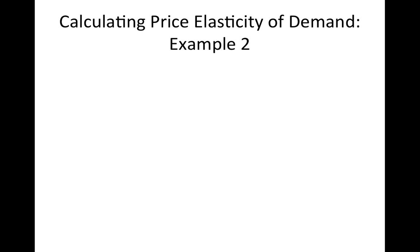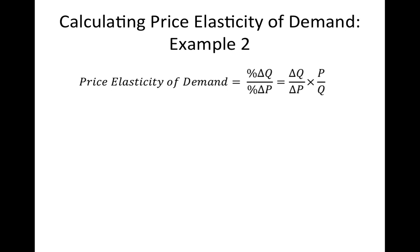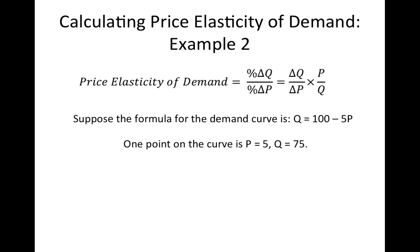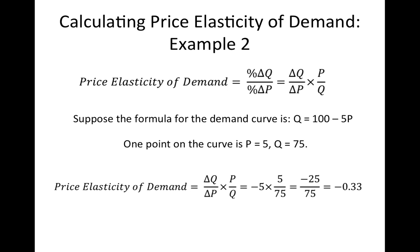A second way to compute the price elasticity of demand is to use the formula for the demand curve. The change in quantity divided by the change in price is simply the slope of the demand curve. Therefore, if you know the slope of the demand curve and the coordinates of a point on the demand curve, you can find the elasticity at this point. Suppose that we have a demand curve whose formula is quantity equals 100 minus 5 times the price. One point on this demand curve is price equals 5 and quantity equals 75. The price elasticity of demand will equal the slope of the demand curve times 5 divided by 75, or negative 0.33. This means that for every 1% increase in the price, quantity demanded falls by 0.33%.